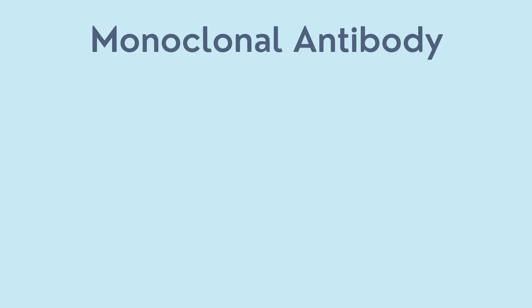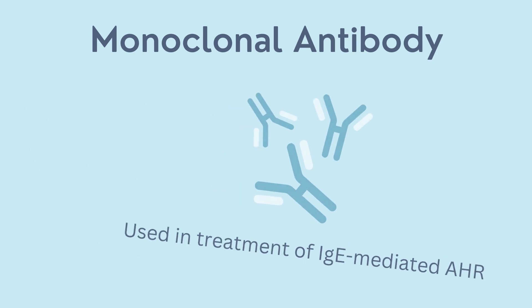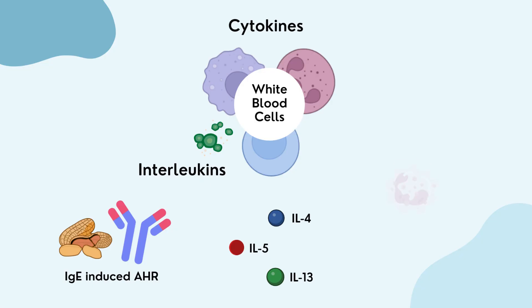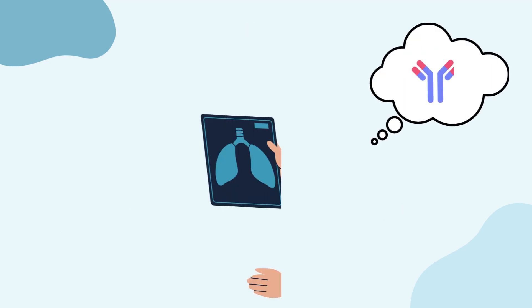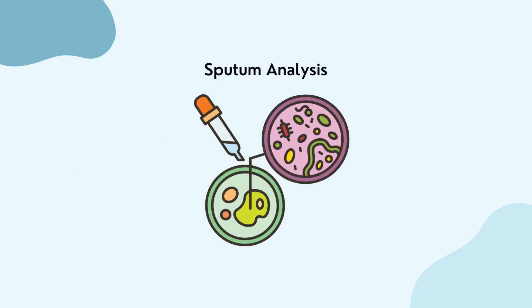Monoclonal antibodies, which we will explore in our video on treatments in further depth, are proteins that can neutralize other proteins and are very useful in the treatment of IgE-mediated AHR. Many treatment options involve the inhibition of IgE with monoclonal antibodies, such as anti-IgE. IgE-mediated AHR leads to the recruitment of eosinophils, a type of white blood cell. Thus, the presence of eosinophils in the airway can clue clinicians in that this may be IgE-mediated AHR. This can be identified by something called a sputum analysis, which is explained in detail in our video on sputum analysis.